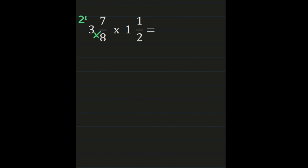We do that by multiplying the denominator times the whole number and then adding the numerator. So 8 times 3 is 24, and then we add our numerator: 24 plus 7 is 31. The 31 becomes our numerator, and the denominator of 8 remains the same.